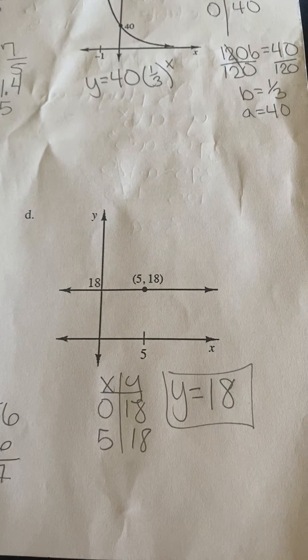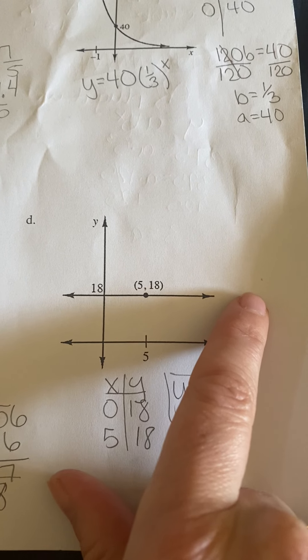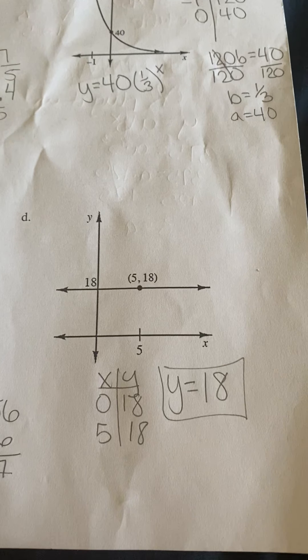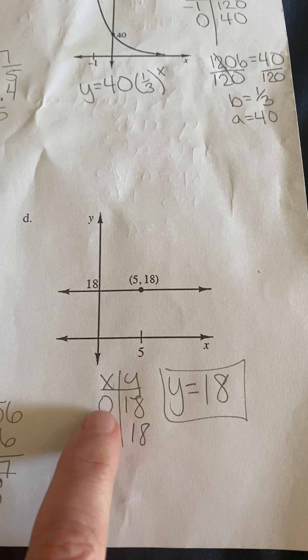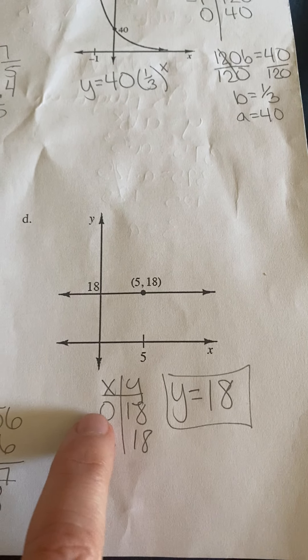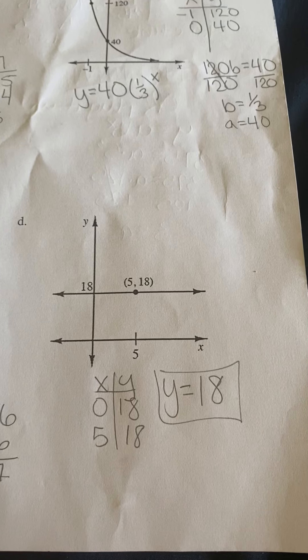Okay, number 4. This one's not so tricky. It is a horizontal line. And so you can think of it as what you know about linear equations: b equals 18 and it doesn't have a slope. So y equals 18.